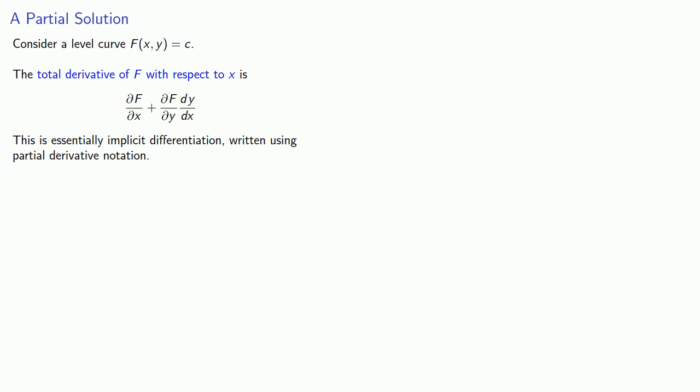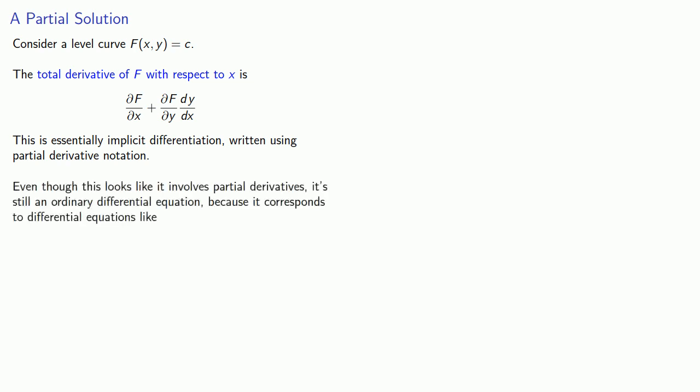Even though this looks like it involves partial derivatives, it's still an ordinary differential equation, because it corresponds to differential equations like dy/dx times (x squared cosine y plus 1) plus 2x sine y equals 0 — which is the one we got before.